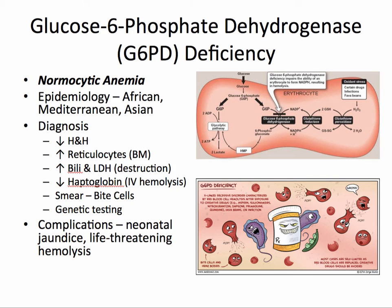Glucose-6-phosphate dehydrogenase deficiency is an X-linked recessive disorder characterized by red blood cell hemolysis after exposure to oxidative drugs such as aspirin, sulfonamides, nitrofurantoin, dapsone, fava beans, or infection. This condition results in a normocytic anemia and is most common in the African, Mediterranean, and Asian populations.